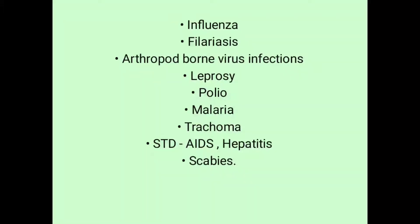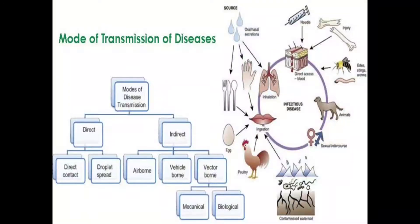So all these are communicable diseases, meaning they transmit from one person to another. Now let's look at the modes of transmission of communicable diseases. There are two methods: direct and indirect. In the direct method, if you are in direct contact with someone, the disease spreads through direct contact.